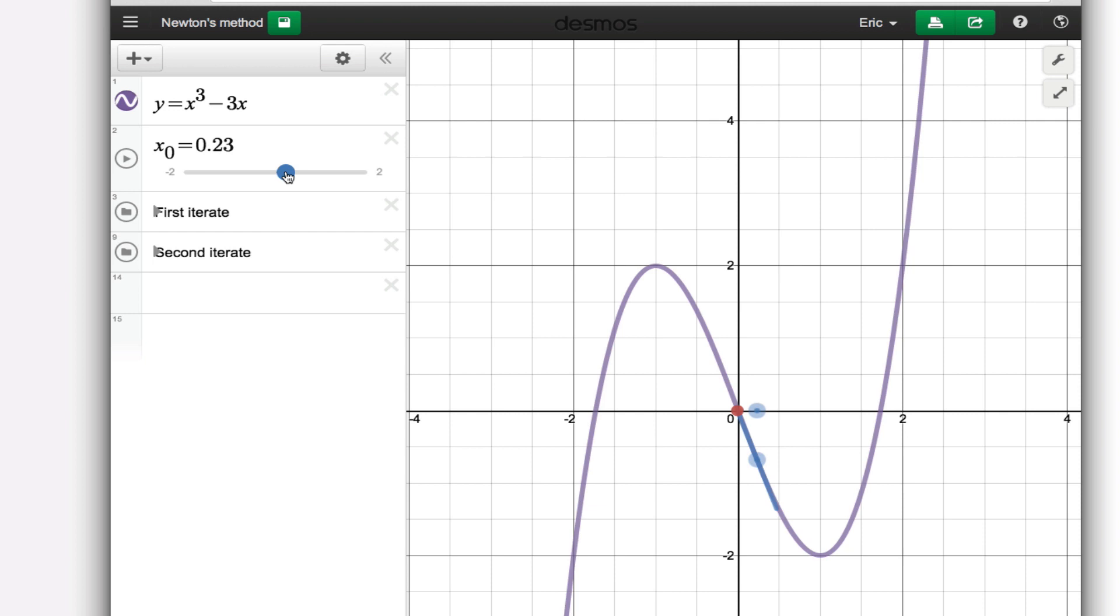How do I modify that? Well, if I slide my point along, I can increase it or decrease it. If I go down this way, you can see all through this range right near the origin, Newton's method will converge to the origin. If I go far enough out here...